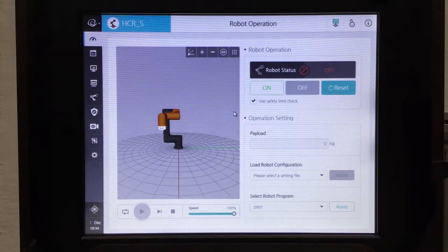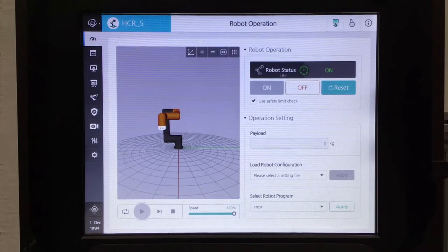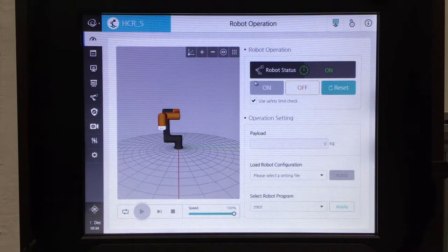In this video we will be discussing the manual move screen, how to manually control your robot. The first thing when you turn your robot on is you'll be brought to the robot operation page. Here you will see the robot status is off. You click the on button, the robot status changes to on, the green LED light changes from red to green and it will be ready to go.